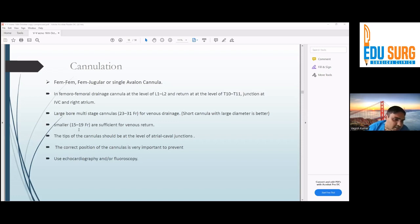Smaller cannulas, 15 to 19 French are sufficient for venous return and tip of the cannula should be at the level of IVC-SVC junction, which I told you before, and the correct position of cannula is very important to prevent recirculation. Normally, we used fluoroscopy. Most of the time, 90% I used fluoroscopy when inserting VV ECMO. 10-15% of the time, we used either TOE or TTE. Whenever we were going for retrieval, we were taking TOE probe and machine with us. If fluoroscopy is not available, we were doing TOE guided ECMO cannulation just to see the tip of your ECMO cannula.